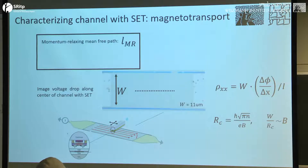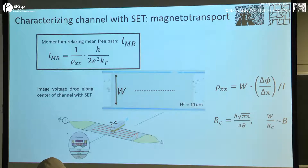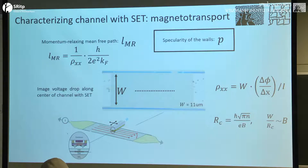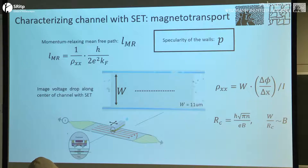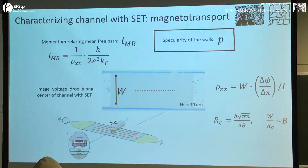From these measurements we'll extract two things: the momentum-relaxing mean free path LMR, using the magnetoresistance data, and the specularity coefficient P of the walls. When P equals zero, the walls are fully diffusive; when P equals one, you have fully specular deflection. This isn't a complete description, but these are the key parameters.